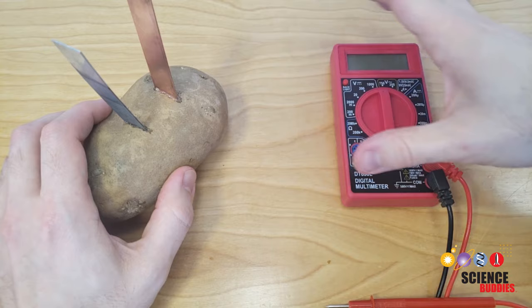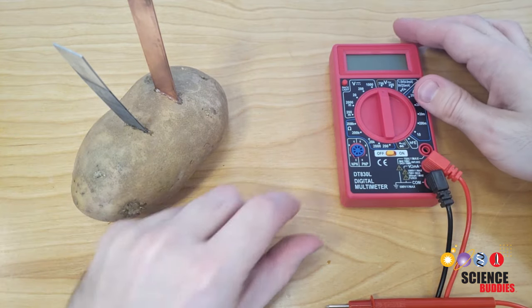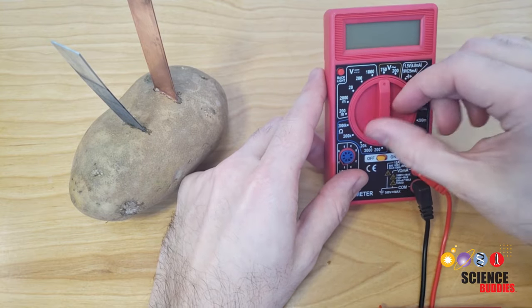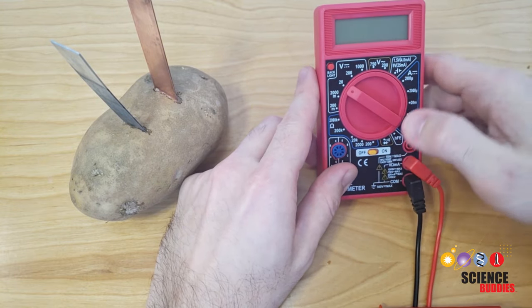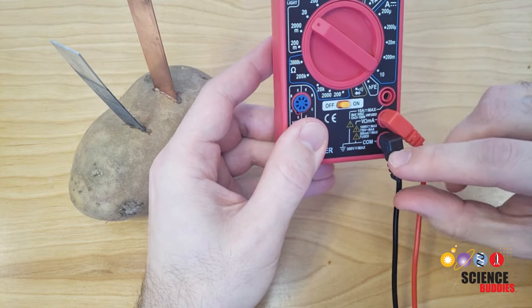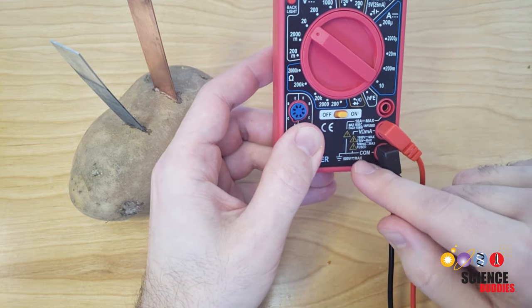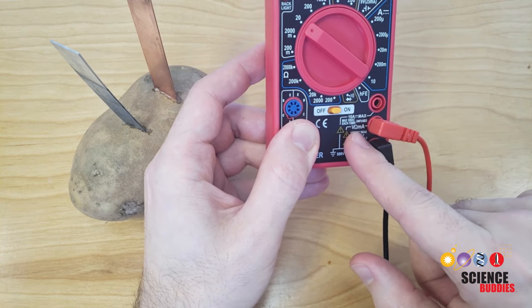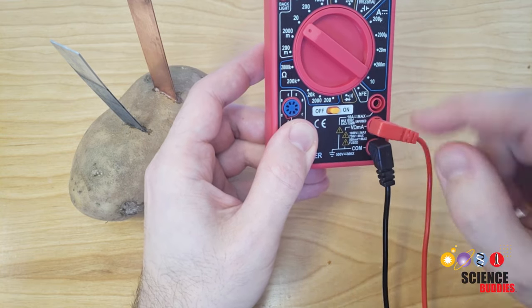Once you have done that, we are going to use our multimeter to measure the voltage output of the battery. Do that by setting the multimeter dial to the 20 volt setting over here on the left. Turn the multimeter on, make sure that the black probe is plugged into the COM port down here, and the red probe is plugged into the V Omega MA port, that's the one for measuring voltage.